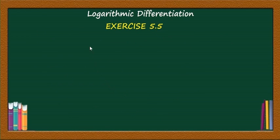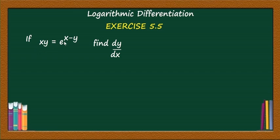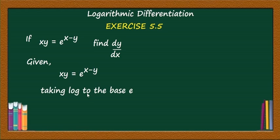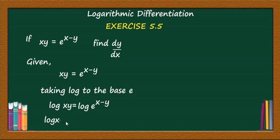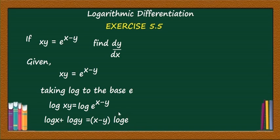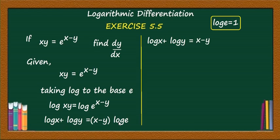Now see this question: if xy = e^(x−y), find dy/dx. In this problem, directly take the logarithm. Given xy = e^(x−y), taking log to the base e: log(xy) = log(e^(x−y)). Using log(mn) = log m + log n, we get log x + log y = (x−y)·log e. Since log e (base e) equals 1, this simplifies to log x + log y = x − y.